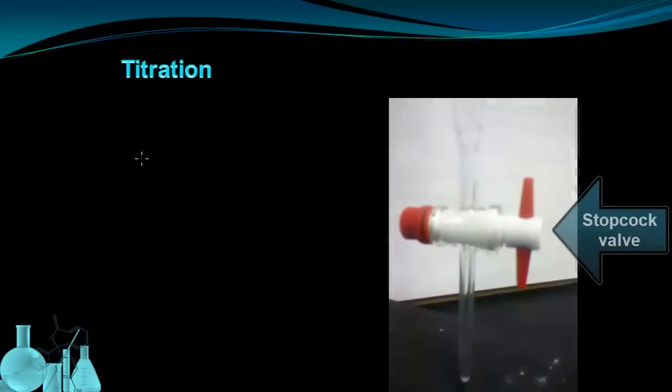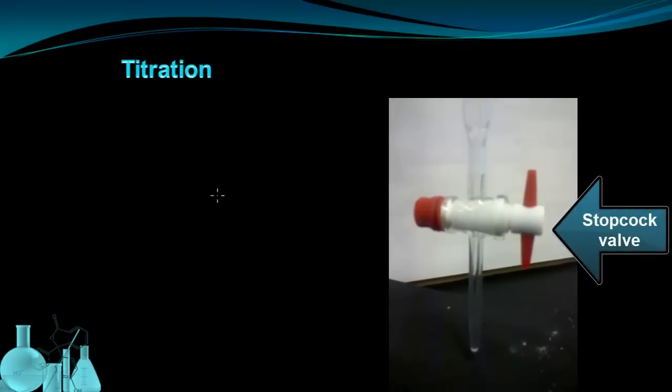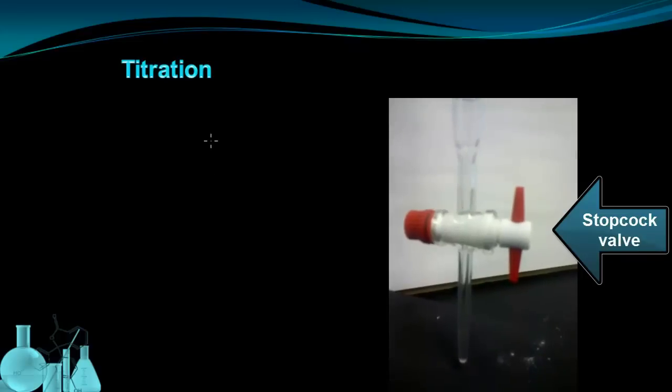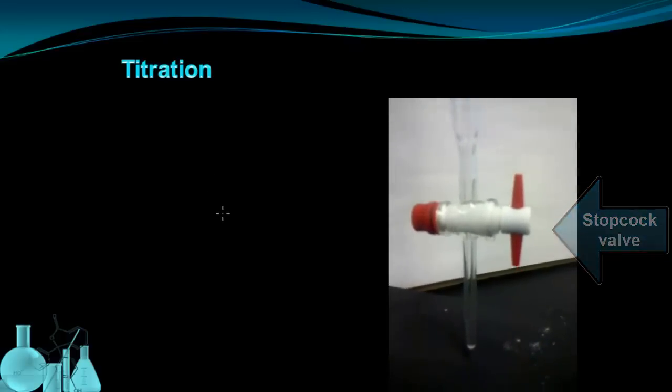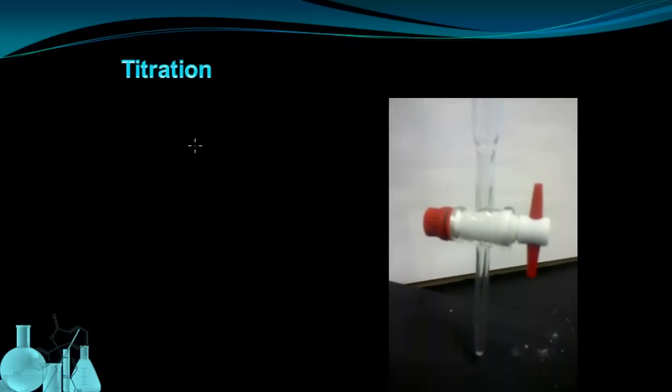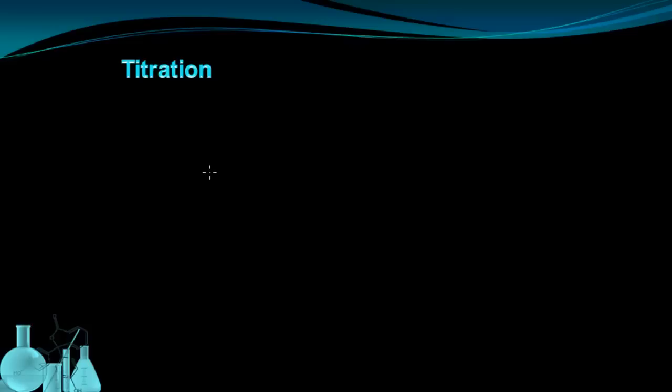And the burette ends with a valve called a stopcock and a small glass tip. It's important to note about the valve that when the valve is lined up vertically like it is here, so it's in line with the burette, it's open. To close it, you would turn it perpendicular to the burette, and you'll see that in the video.